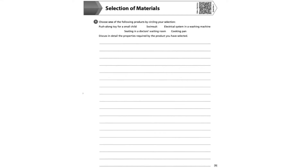For this question, we are asked to choose one of the following products by circling your selection. The choices are: a push-along toy for a small child, a swimsuit, an electrical system in a washing machine, seating in a doctor's waiting room, or a cooking pan.